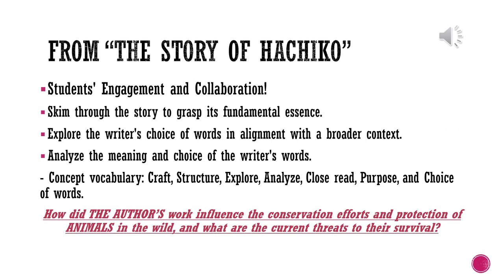We're going to start off with our first basic text, the story of a little real dog. As part of an engagement, students are going to skim through various techniques like jigsaw reading. They're going to explore the writer's choice of words in alignment with broader context, analyze, and be introduced to various kinds of vocabulary. Lastly, we're going to move on to a tangent question: how did the author's work influence conservation efforts in protection of monkeys or dogs in the wild, and what are the current threats to their survival?